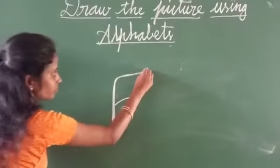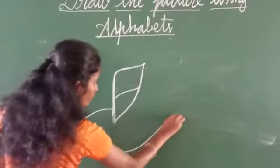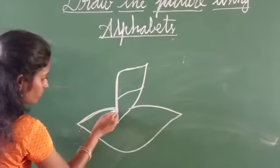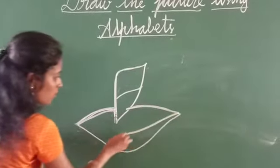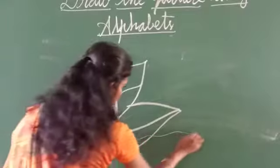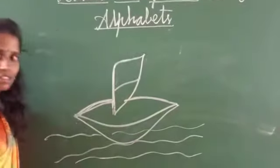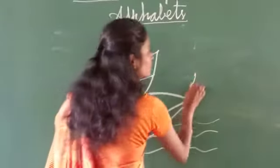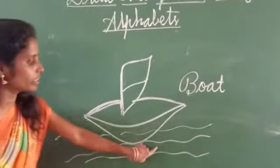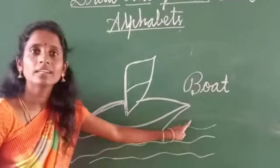What is this? This is boat. The boat sails on the sea. The boat sails on the sea.